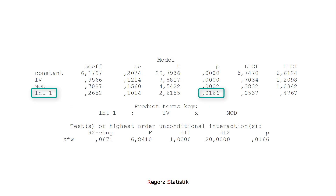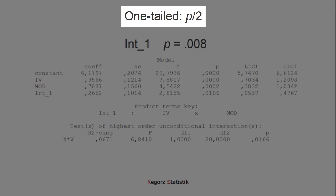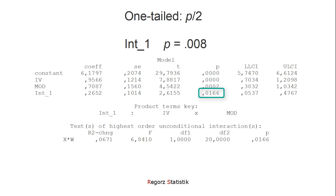If you want to report a one-tailed test, then you have to adjust that p-value. Let's assume that you predicted a positive interaction term, as it is in this case. Then you simply divide the p-value by 2, and the p-value you would report is this.